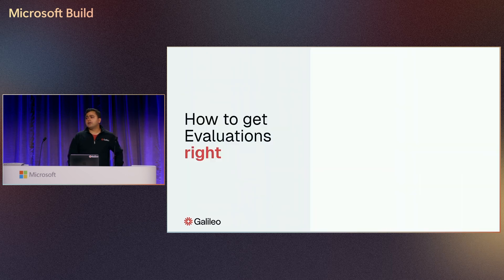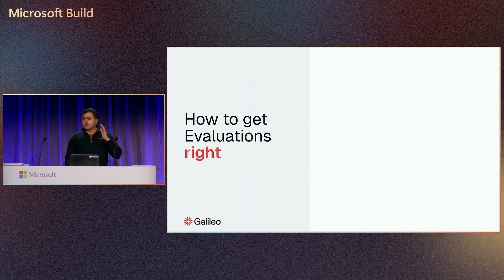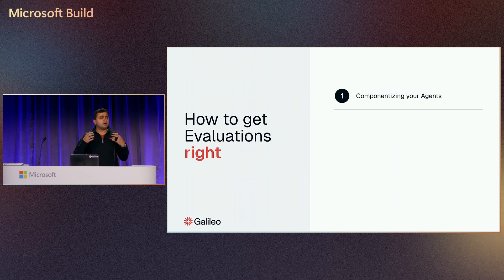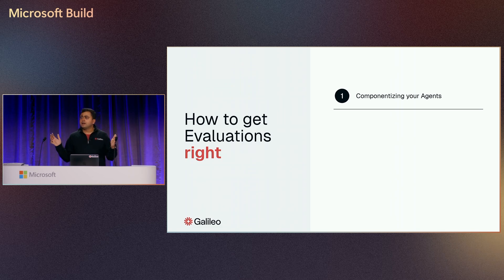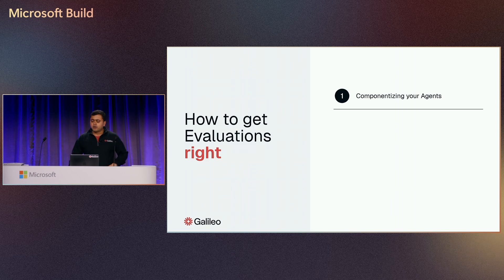How to get evaluations right — we do a lot of these workshops with the large LLM providers and our large enterprise customers. There are a few key focus areas, especially with agents. Firstly, we're all componentizing agents. We're learning how to build multi-agentic applications — one agent to rule them all is not the reality. We have to build agents that are almost like microservices, doing specific things in an automated manner, and they all work together to make a large automation workflow happen.